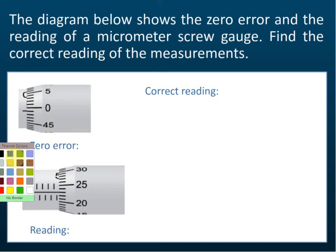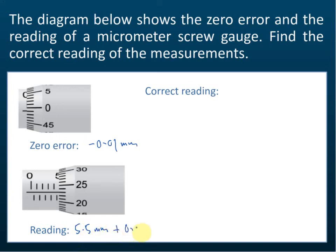Negative 0.01 mm. And the reading of the micrometer screw gauge is 5.5 mm plus 0.23 mm. So the reading is 5.5 mm plus 0.23 mm.